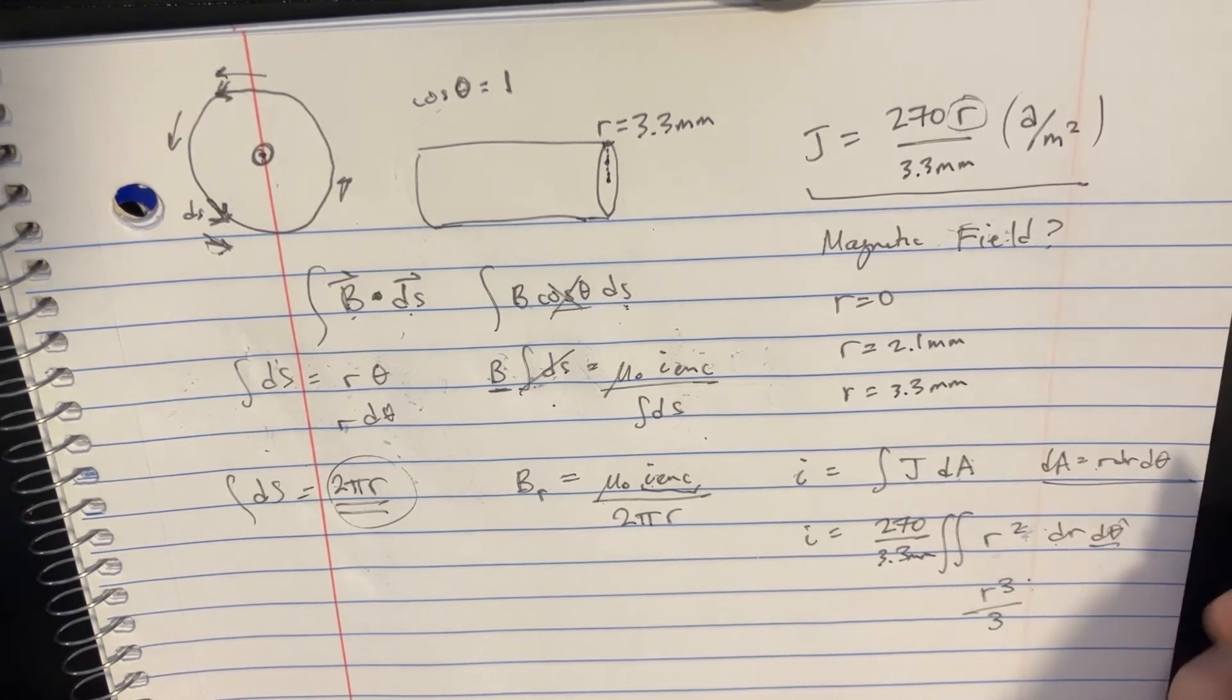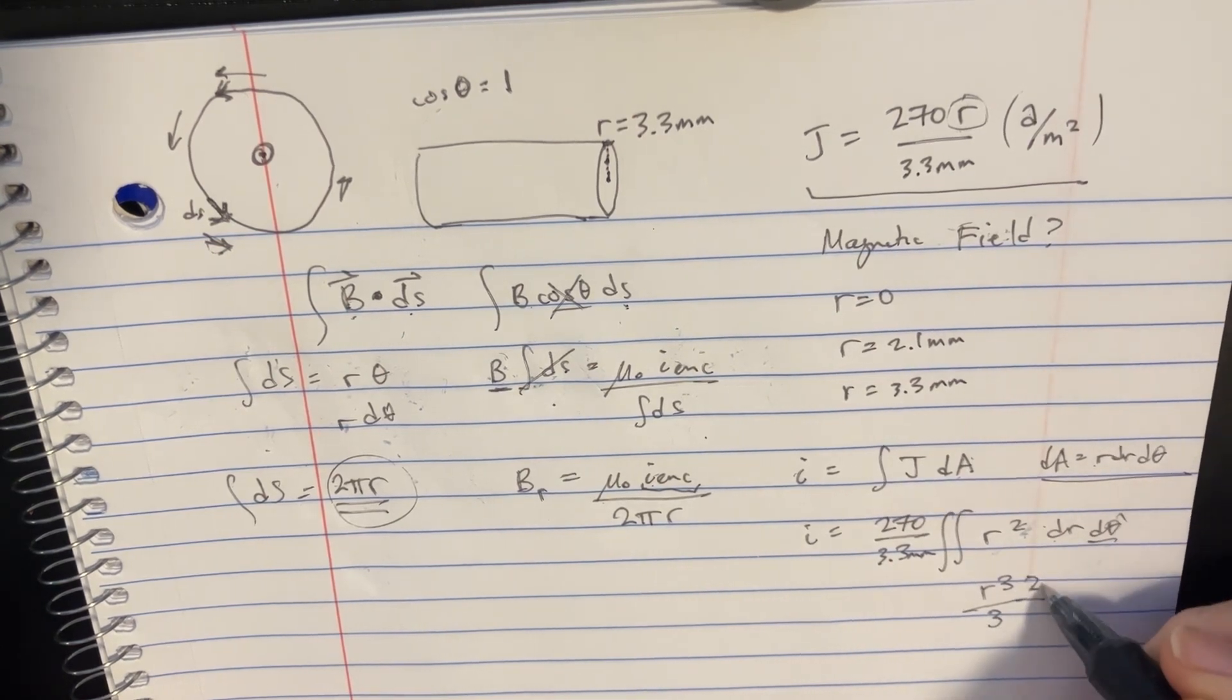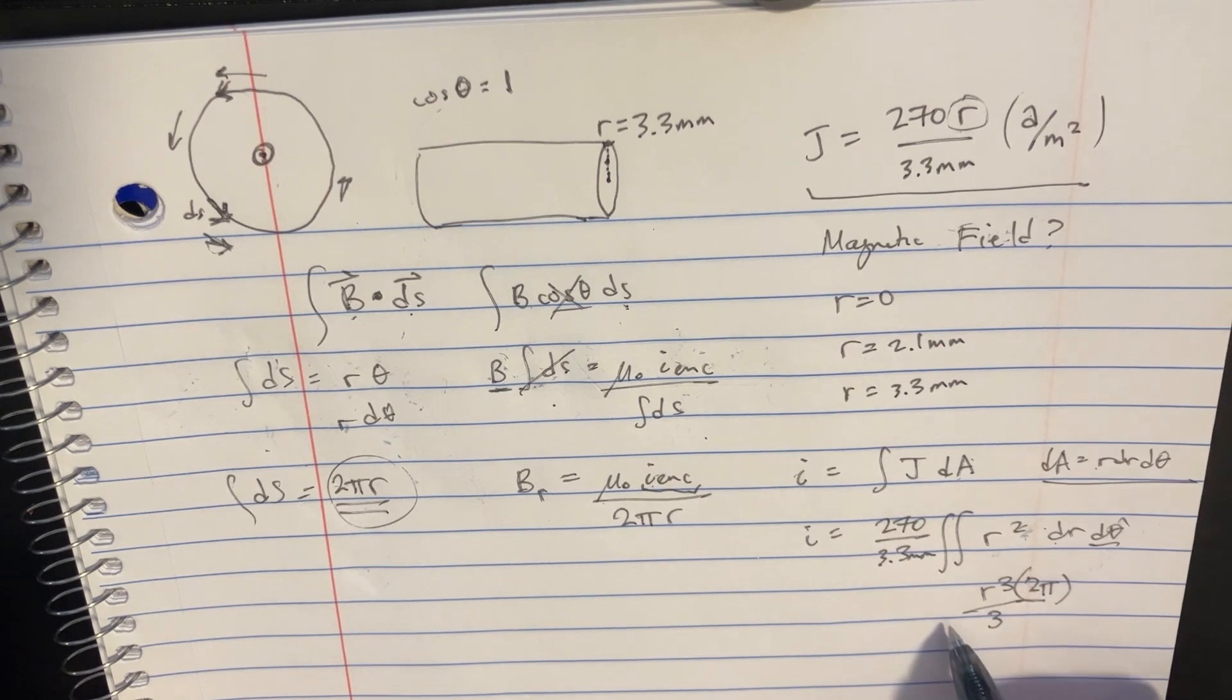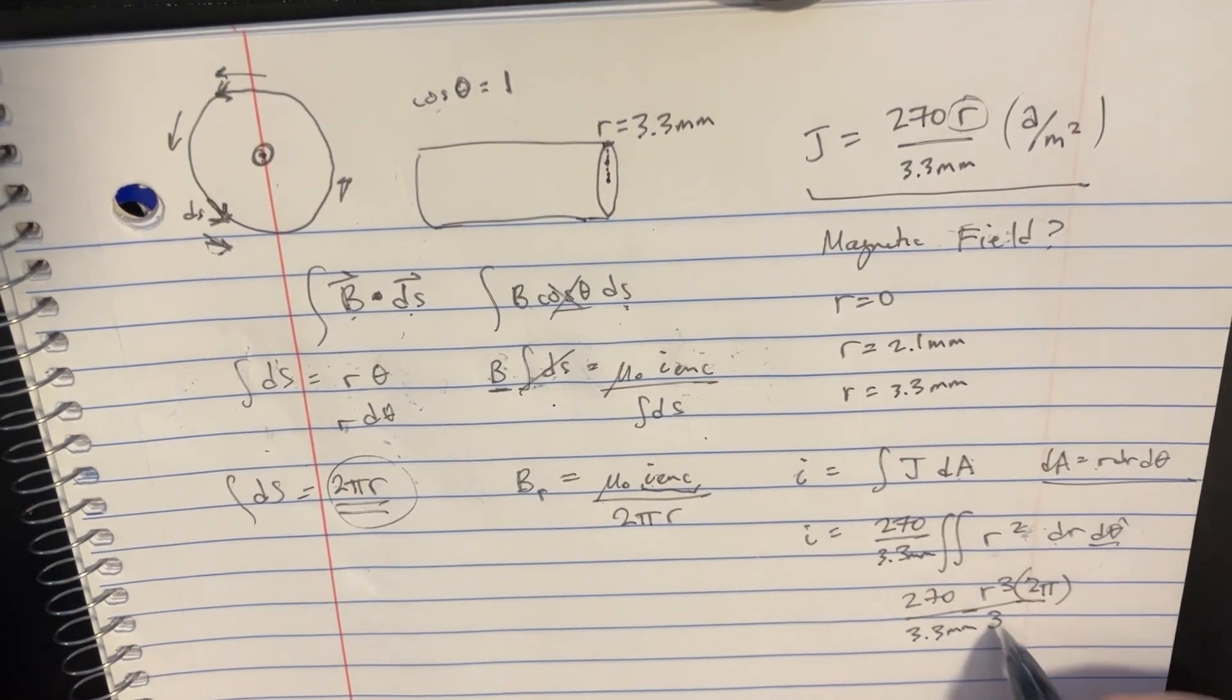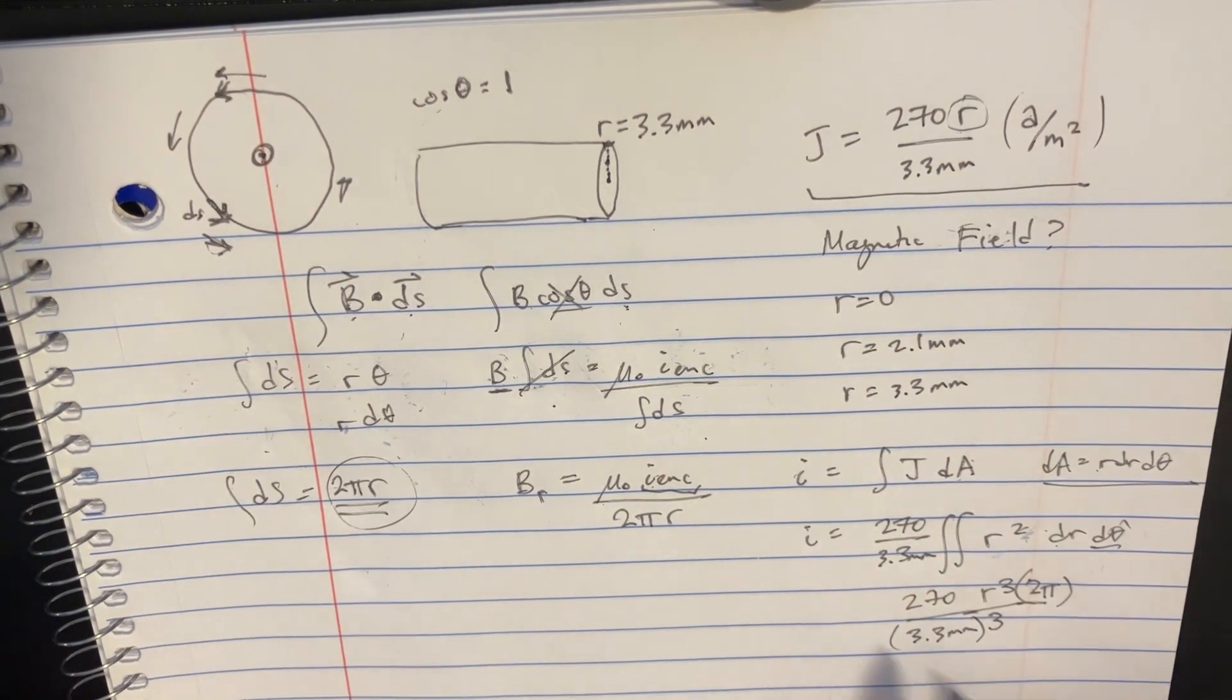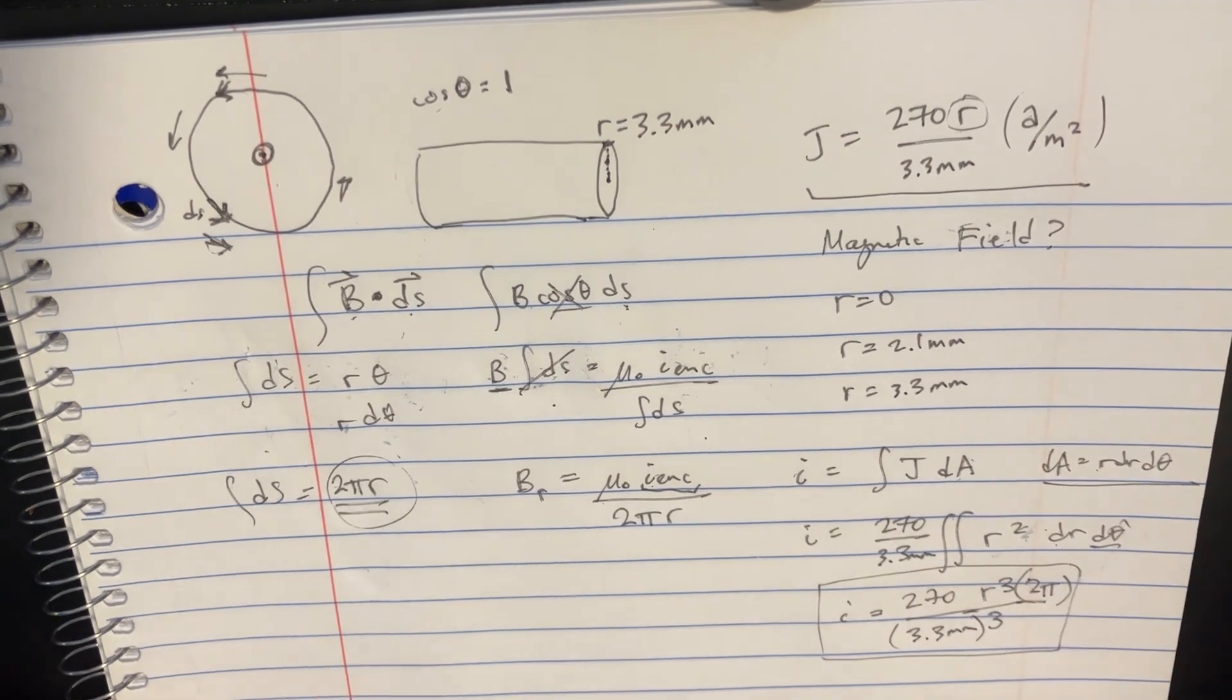And we're also going to integrate across the 2 theta, 2 pi. So we'll just say 2 pi. And then we got 270 over 3.3 millimeters. So it's not too bad to do this integral, but it's a little weird. So that's our i.